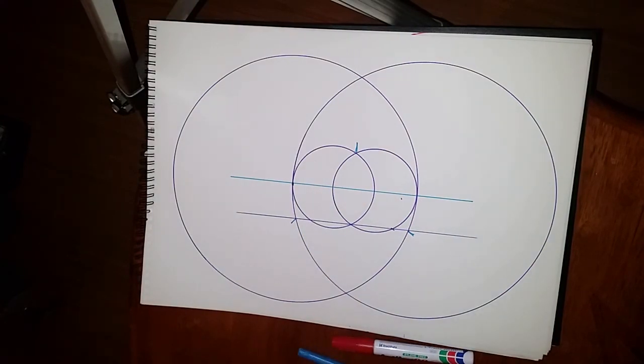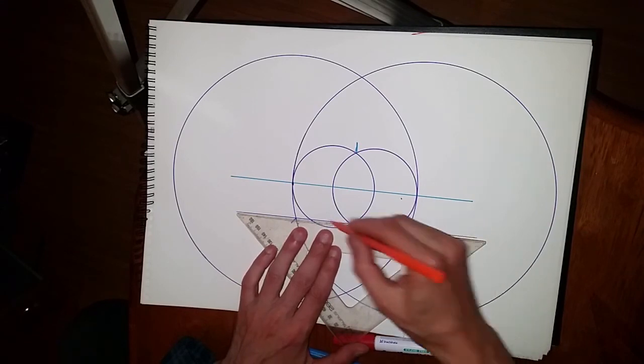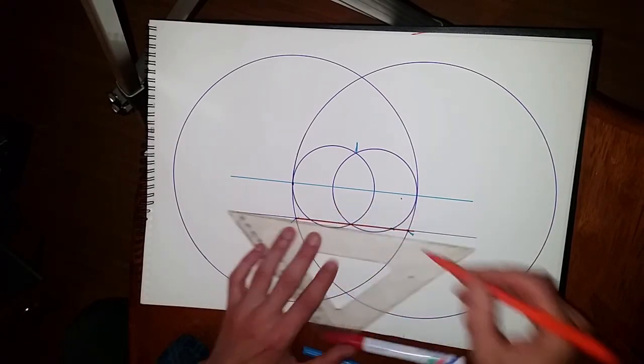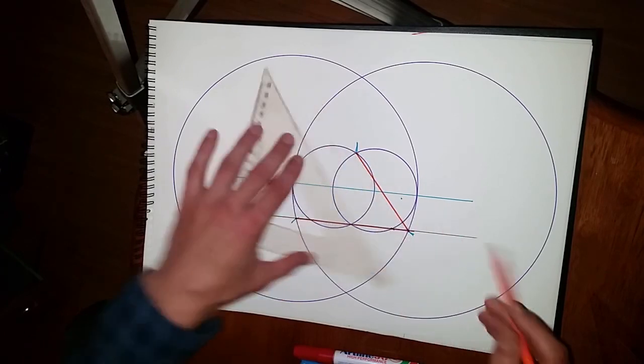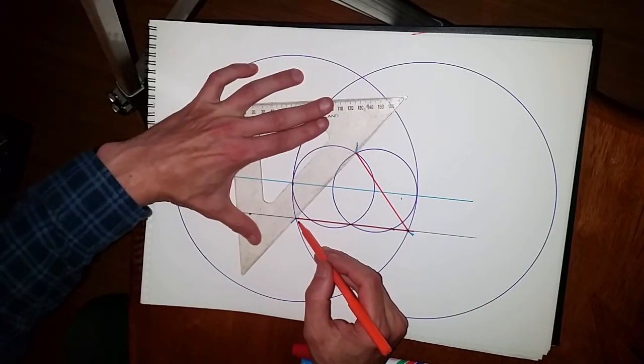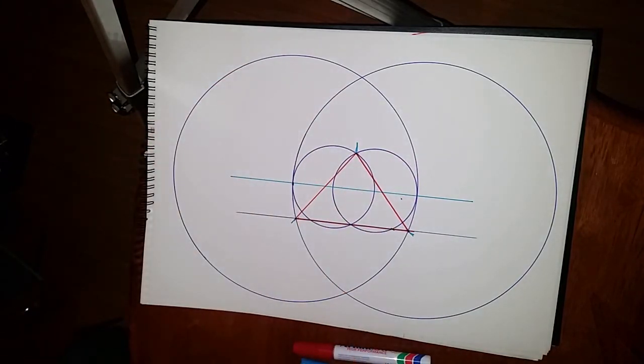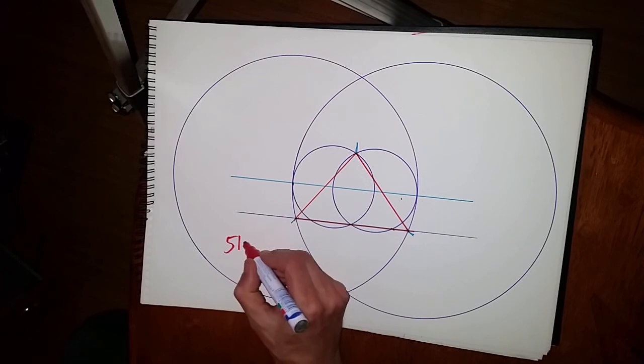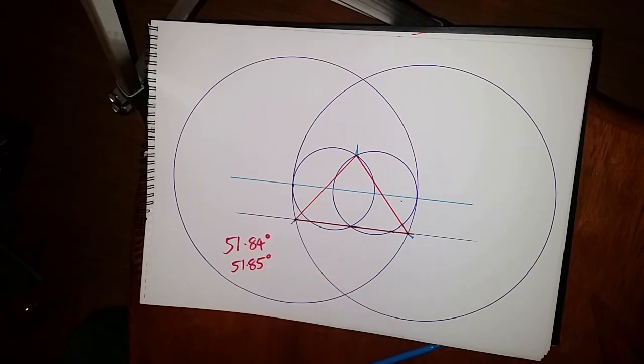We get another color so it stands out. Now we just need to draw, connect those up. We already have that line here, but just to highlight it. And there we have a very close approximate of the Great Pyramid. The angle that we want to get is 51 degrees 0.84 or 51.85, so it's within this very narrow band.